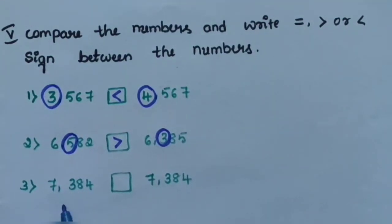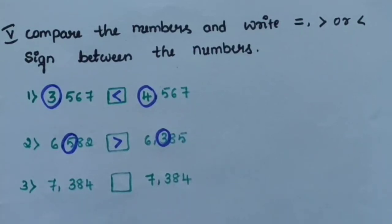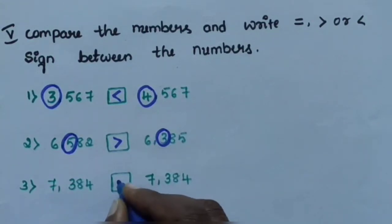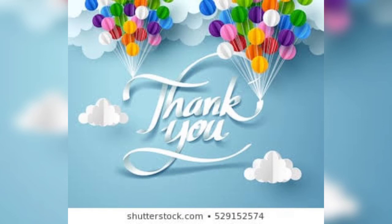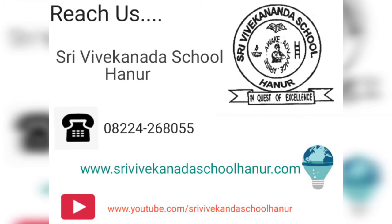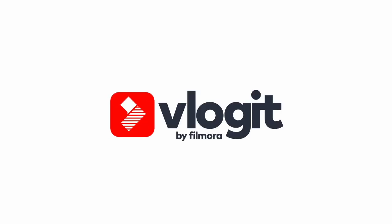Question number 3: 7384 and 7384. These are also 4-digit numbers, but the two numbers are equal, so apply the equal sign. Thank you.